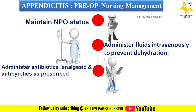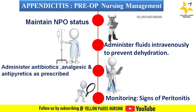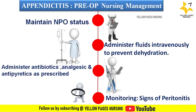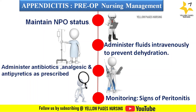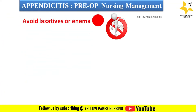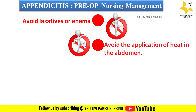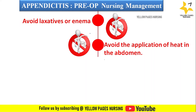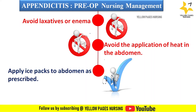Administer fluids intravenously to prevent dehydration, and administer antibiotics, analgesics, and antipyretics as prescribed. Monitor signs of peritonitis, which include increased heart rate, increased respiration, increased temperature, and abdominal pain and distension. Avoid laxatives or enemas, as they may lead to perforation. Avoid application of heat to the abdomen, which may increase the risk of rupture. Apply an ice pack to the abdomen as prescribed to reduce pain, and complete all investigations as prescribed before surgery.